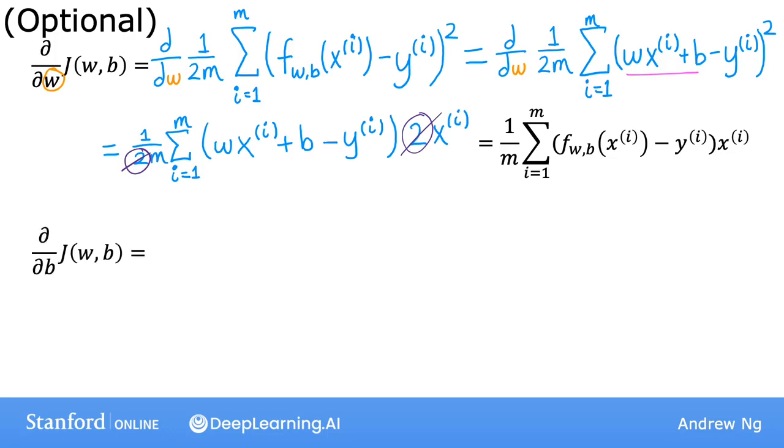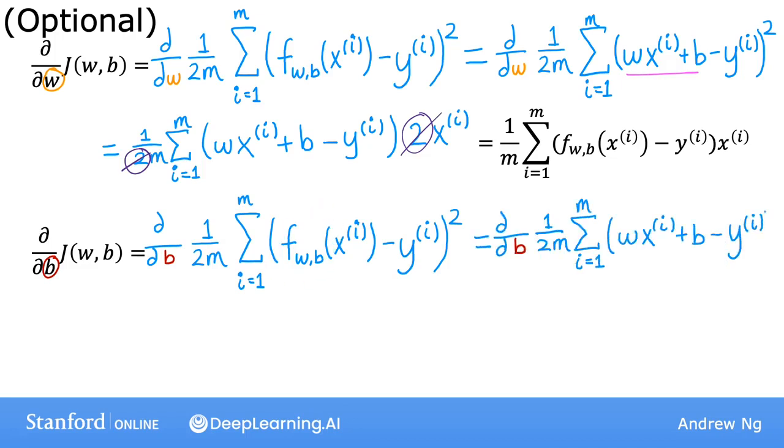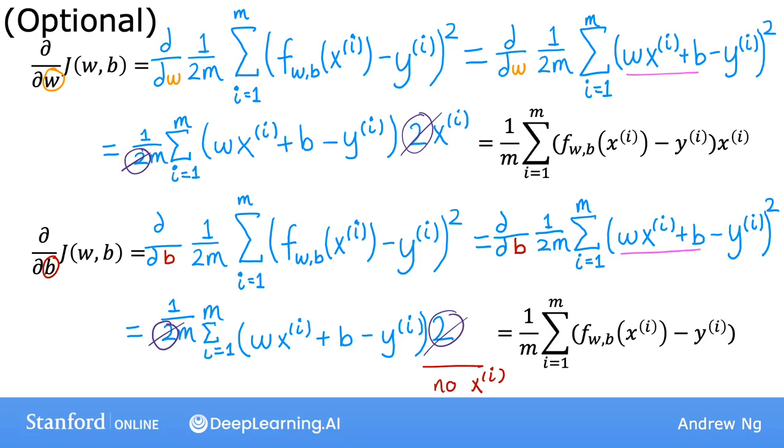For the other derivative with respect to b, this is quite similar. I can write it out like this and once again plug in the definition of f of xi, giving this equation. And by the rules of calculus, this is equal to this, where there's no xi anymore at the end. And so the 2's cancel once more, and you end up with this expression for the derivative with respect to b. And so now you have these two expressions for the derivatives, and you can plug them into the gradient descent algorithm.